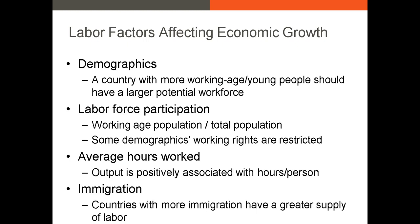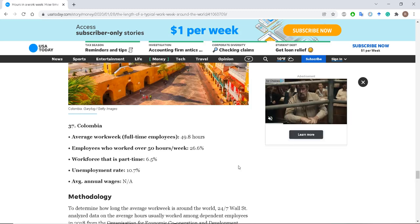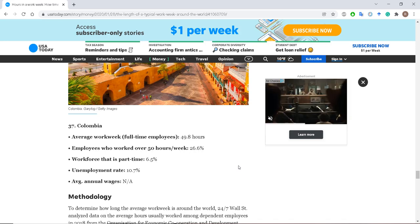Other factors, like the number of eligible workers or labor force participation, can also affect labor growth. Historically in many countries, women were not allowed to work outside the home, which decreases total labor hours in an economy. The average number of hours worked per week also influences labor growth. In Denmark, full-time workers work as little as 37.2 hours per week on average, whereas in Colombia full-time employees work an average of 49.8 hours per week. Hours also depend on the sector.